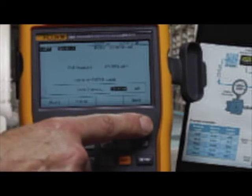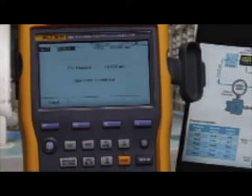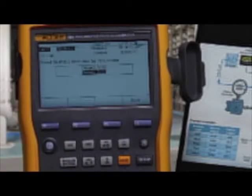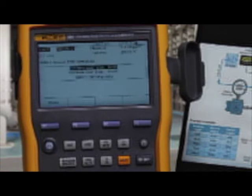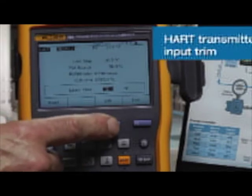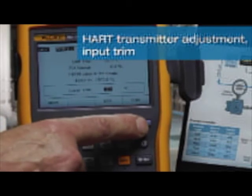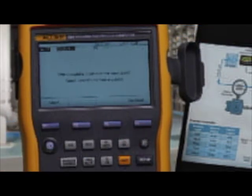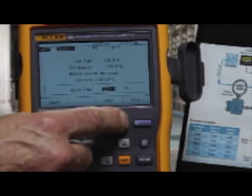Next we're going to trim the input to the transmitter, the input A to D. We're going to trim the lower range value first and continue and trim the upper range value.